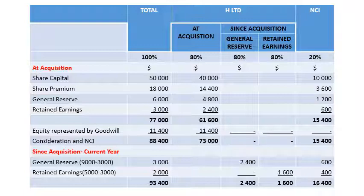For since-acquisition reserves: the general reserve increased from $6,000 to $9,000 — an increase of $3,000. H Limited's 80% share is $2,400 and NCI's 20% share is $600. Retained earnings increased from $3,000 to $5,000 — an increase of $2,000. H Limited's share is $1,600 and NCI's share is $400. We only include those reserves that have changed since acquisition; there are no changes to share premium or share capital.